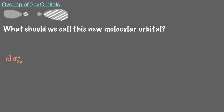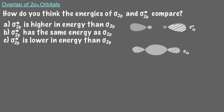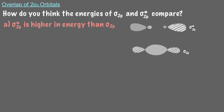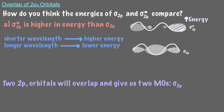Now that we've discussed how sigma 2p and sigma star 2p molecular orbitals form, let's talk about their energies. Sigma star 2p is higher in energy than sigma 2p. Recall the relationship between wavelength and energy: a shorter wavelength is higher in energy, and a longer wavelength is lower in energy. Since sigma star 2p has a shorter wavelength than sigma 2p, sigma star 2p is higher in energy. Remember that both types of overlap happen simultaneously, so our two 2px orbitals overlap to give us two MOs: sigma 2p and sigma star 2p.